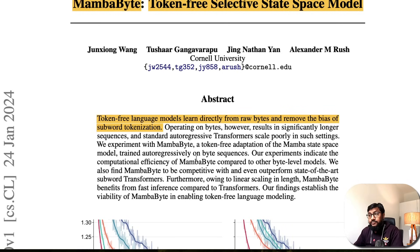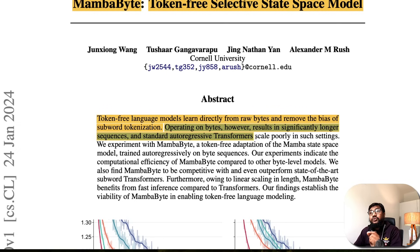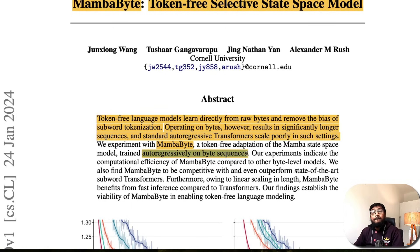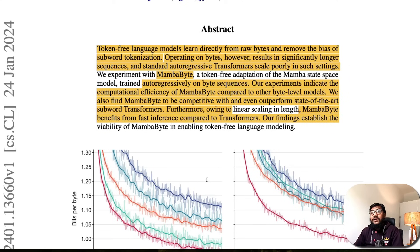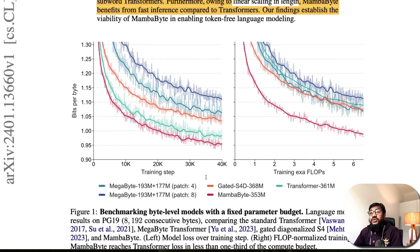One of the things I hope this token-free approach solves is that without tokens, every language would be treated the same depending on the bytes. However, operating on bytes results in significantly longer sequences, and standard autoregressive transformers scale poorly in such settings. That's why MambaByte is interesting — it is trained autoregressively on byte sequences, not tokens, and experiments indicate strong computational efficiency compared to existing models, with linear scaling in sequence length.